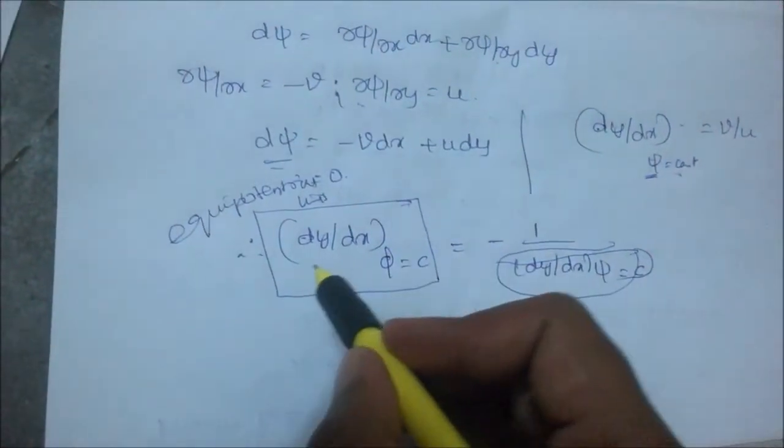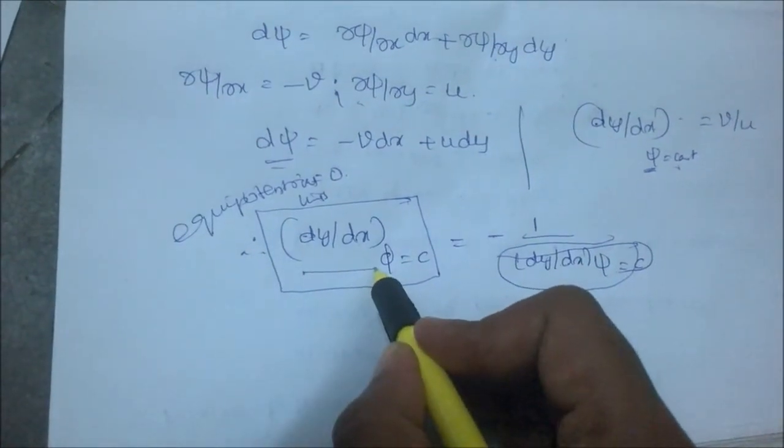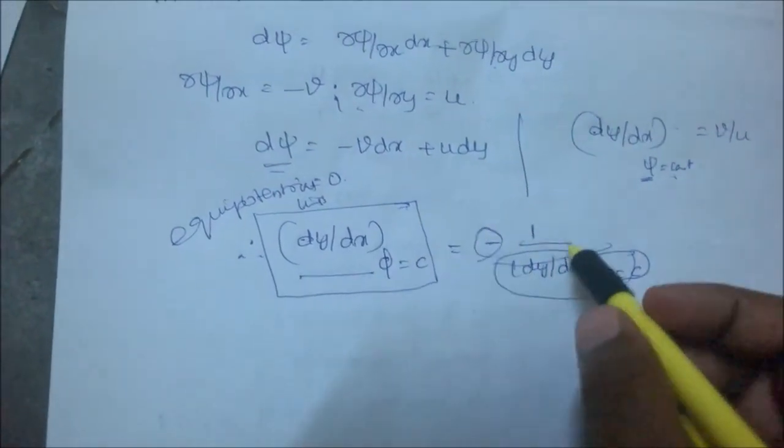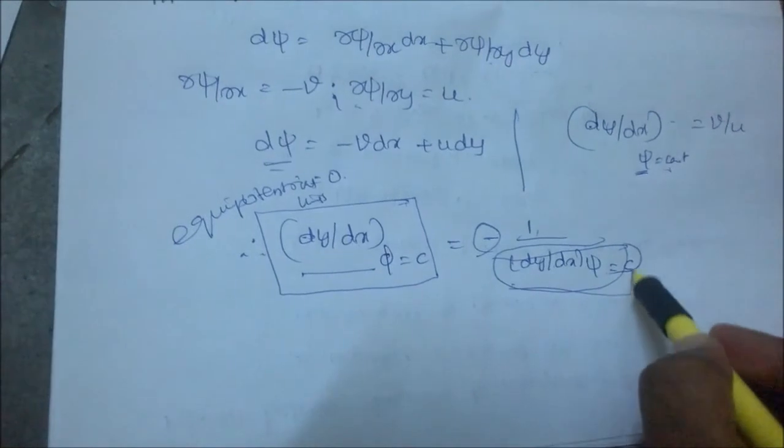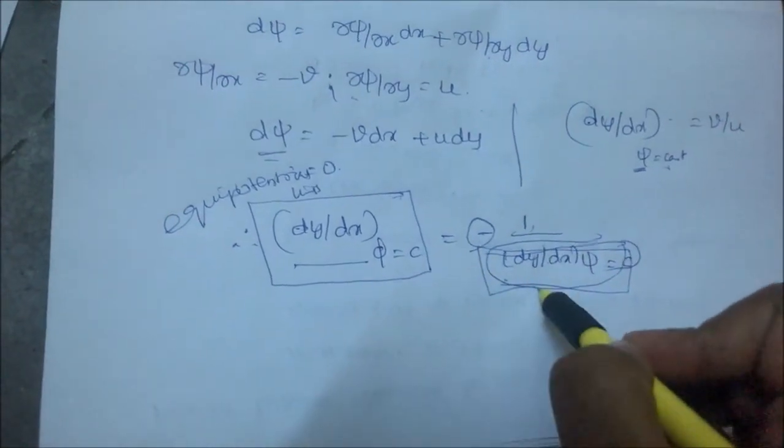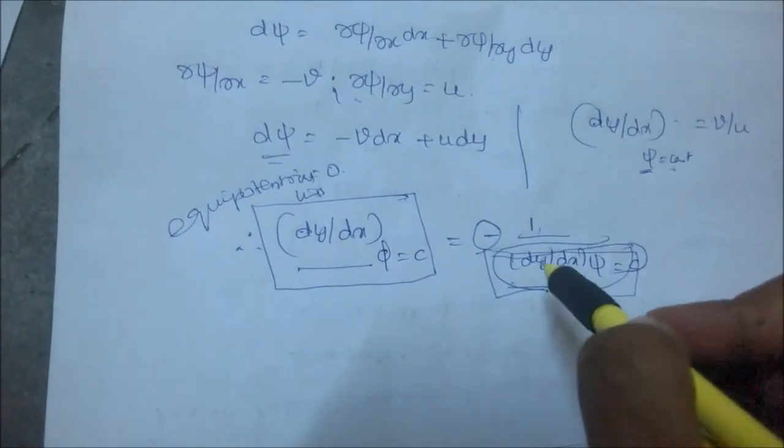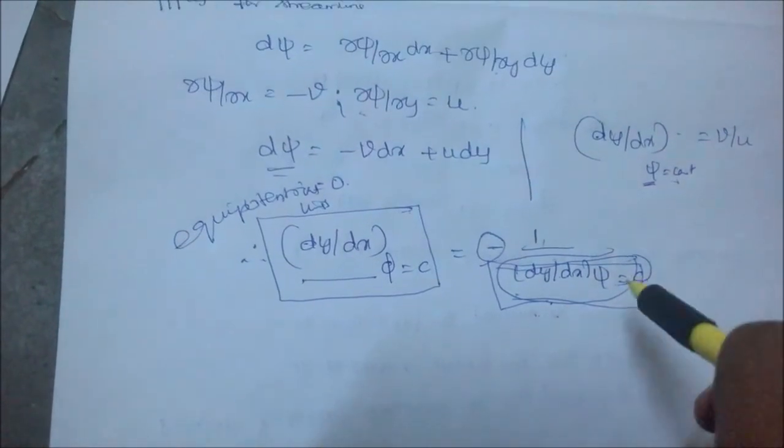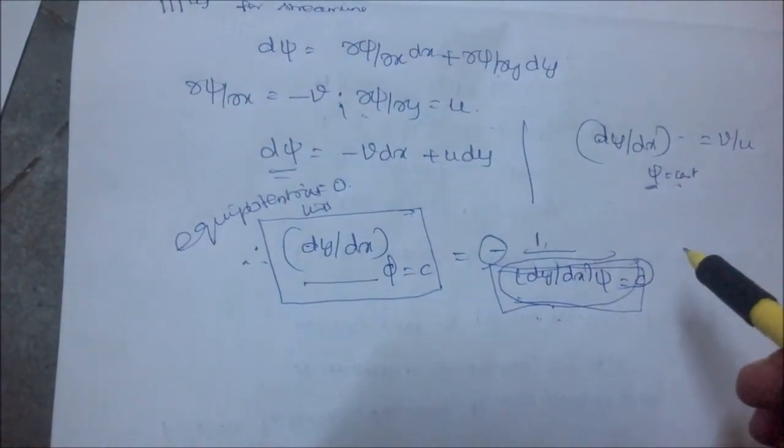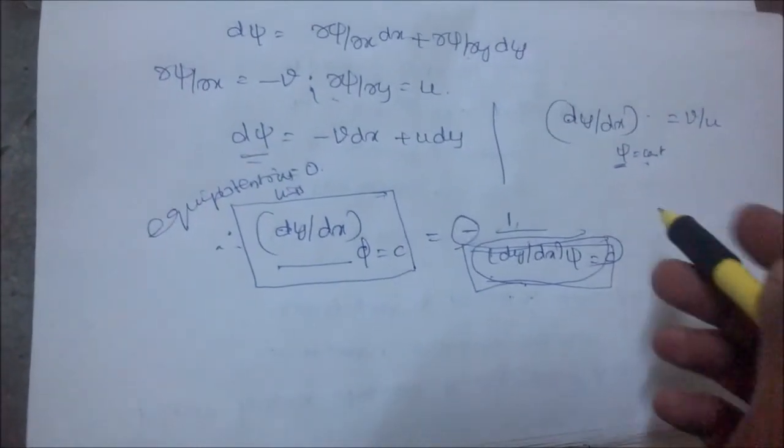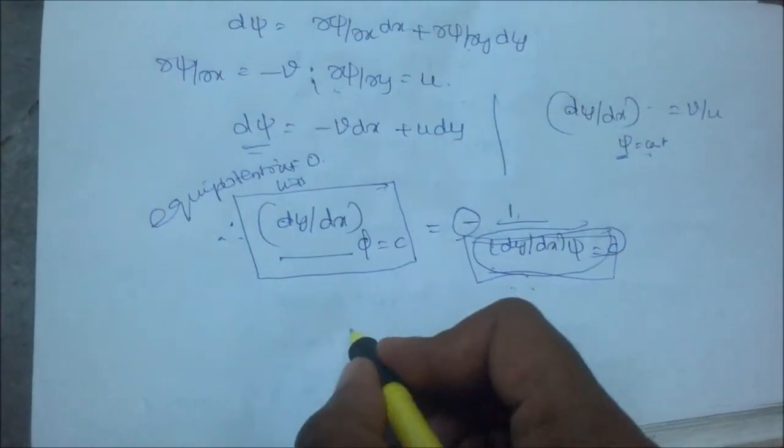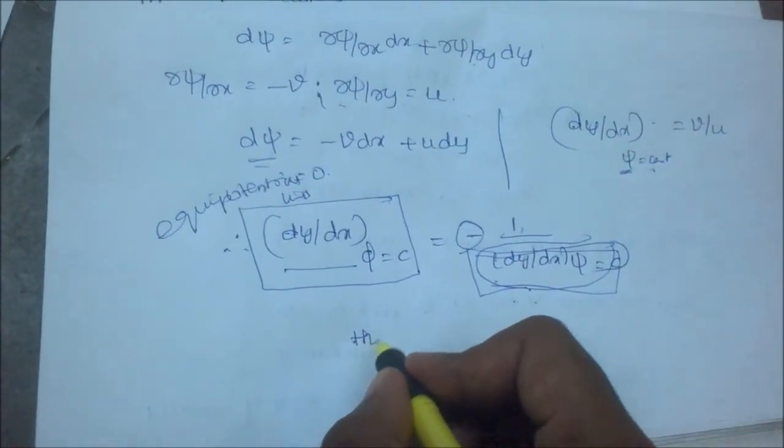So from this, the slope of an equipotential line is negative of the reciprocal of the slope of the stream function. Therefore, streamlines are perpendicular to equipotential lines, except at stagnation points where the velocity components vanish simultaneously.